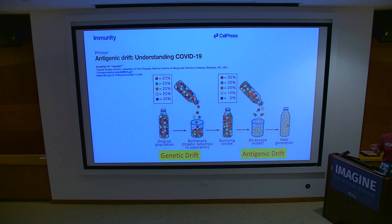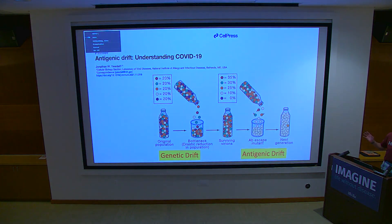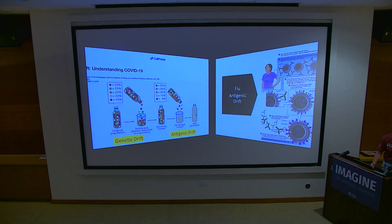HIV in a single patient in one year will undergo as much genetic change as influenza will across the entire human population. Antigenic drift is when we have selection pressure on a virus, typically by a neutralizing antibody. With a monoclonal antibody, it's quite simple — we get a single amino acid substitution that's usually sufficient to reduce antibody affinity enough that the virus escapes. That's how we get antigenic drift.